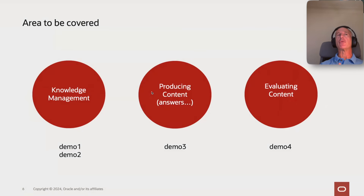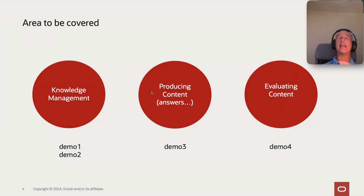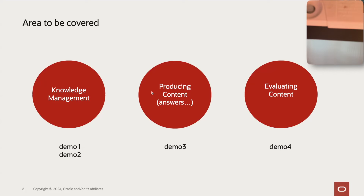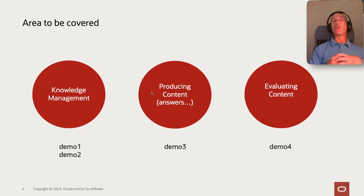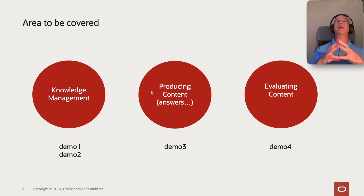There are three main areas. The first and probably most important is the management of documentation, because you want not only to use Generative AI but you want the content generated by AI to be based on your company documentation — private documentation. During the demo we will focus on using documentation in a private vector store, not taken from the internet, because these are private documents and we want to control the quality of the documentation used. The first tool, with two small demos, shows how to load documents inside the knowledge base and how to manage it.